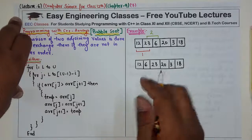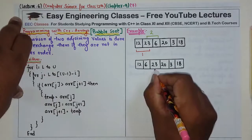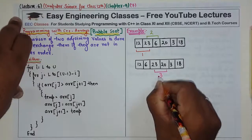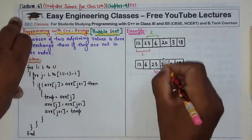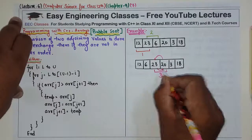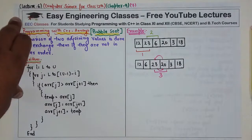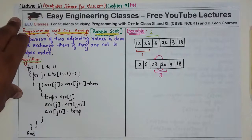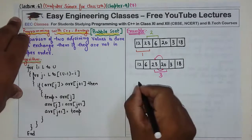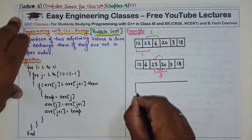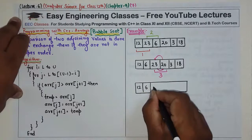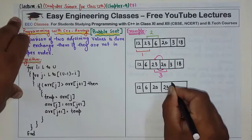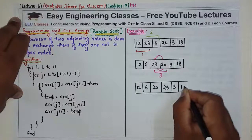Now the third comparison will be between 20 and 23. If 20 is smaller than 23, then we will interchange. After interchange, the array will become: 12, 6, 20, 23, 3, and 18.